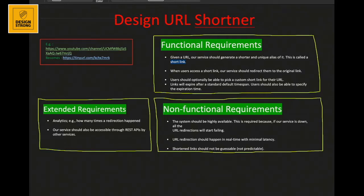Also, links should expire after a standard span of time — for simplicity, assume one year by default — but users should have the ability to modify this expiration. These are the four functional requirements for designing a URL shortener in a tech interview.